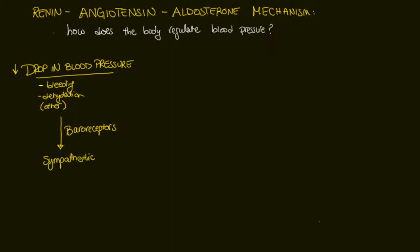Let's look at the specific steps. The first thing the sympathetic nervous system is going to do is stimulate the kidneys to produce an enzyme called renin. The kidneys produce renin, and renin acts to convert angiotensinogen — found in the blood — into angiotensin 1.